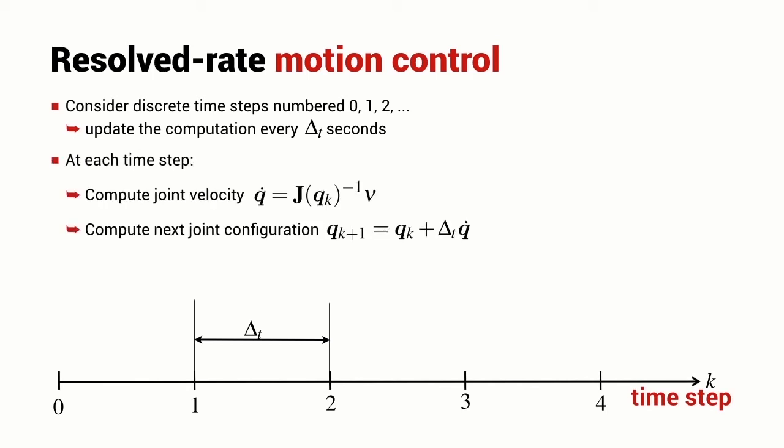At every time step, I'm going to take the current value of the joint angles, QK, which stands for the joint angles at time K. I'm going to compute the Jacobian, take the inverse, multiply it by the velocity that I want to achieve and compute the Q dot that I need to achieve at this particular time step.